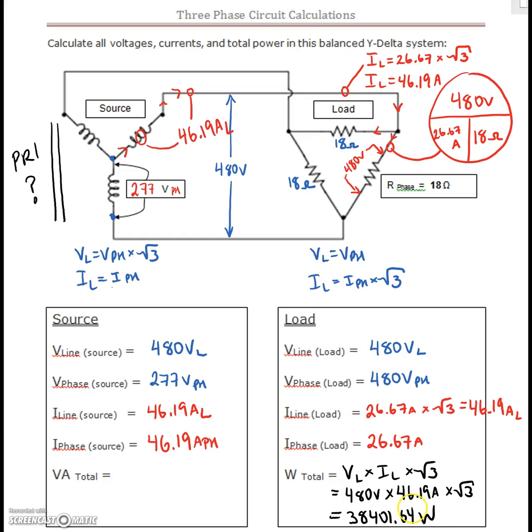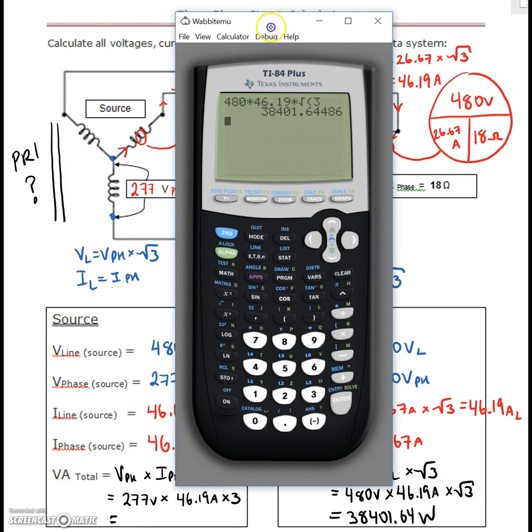And we do watts again because it's just resistive load. We can also double-check that with our phase values. We can do V phase times I phase times 3. Our phase voltage is 277 volts. Our phase current is 46.19 amps. We're going to multiply those single phase values by 3 to get a 3-phase total VA. So what have we got there?